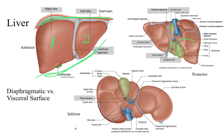As far as ligaments that hold it together and hold it to the abdominal wall, first we have the falciform ligament, which is the most prominent ligament you'll see. It divides the right lobe from the left lobe. It also extends up into the diaphragmatic surface, and the anterior portion connects the liver to the anterior wall of the abdominal cavity.